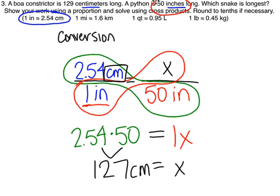Finally, we're going to go back and compare the two lengths. So 50 inches is the same exact length as 127 centimeters. So clearly we can see the boa constrictor is longer because 129 is greater than 127. We could say the boa constrictor is longer by 2 centimeters. It's 2 centimeters longer than the python.